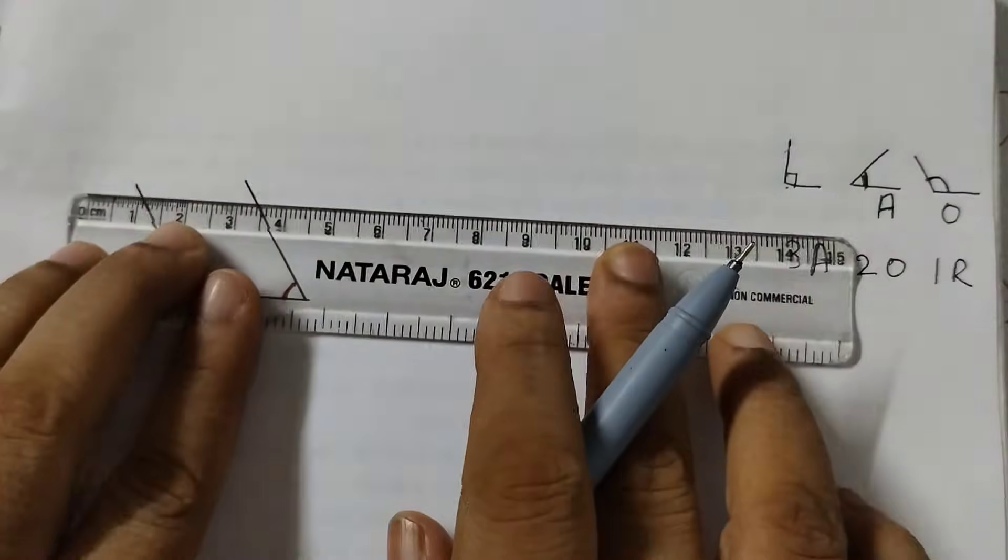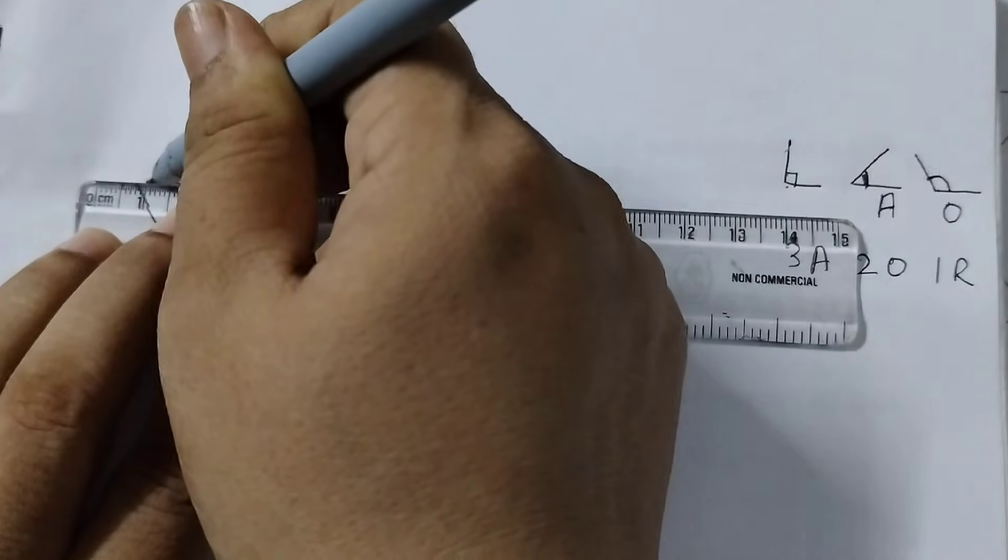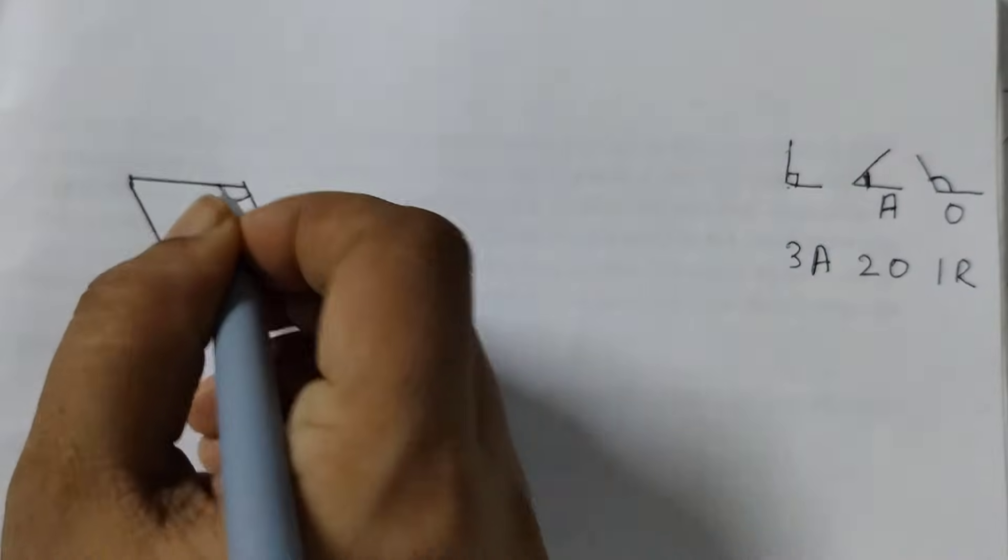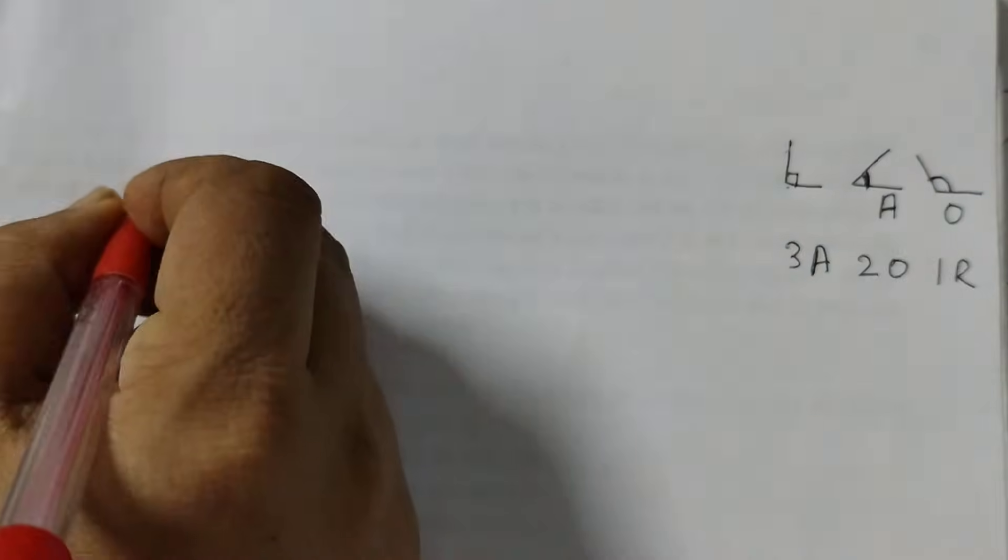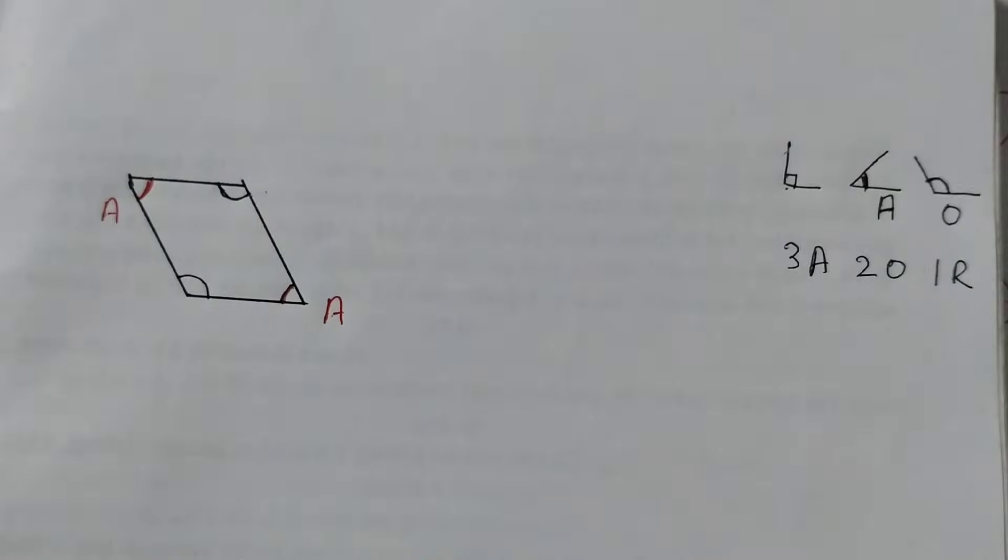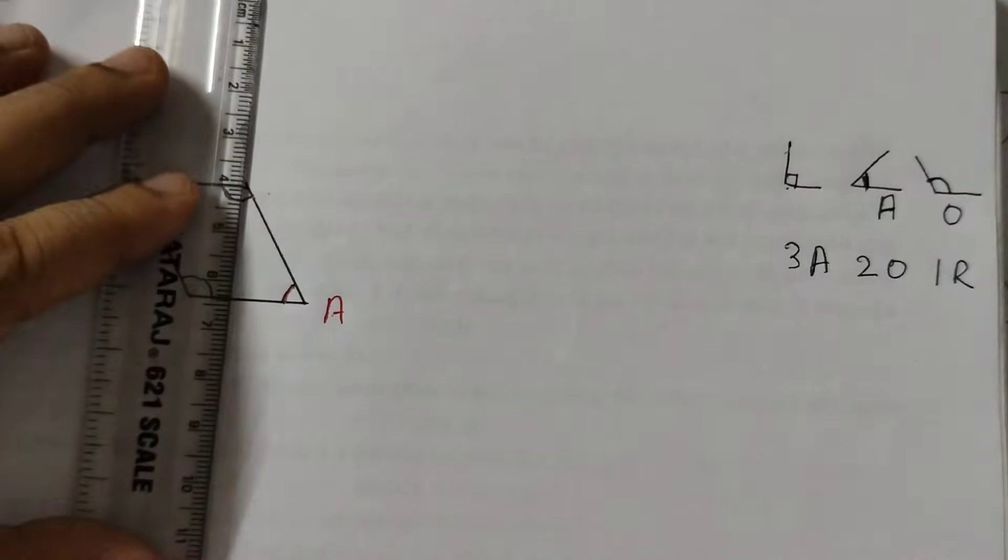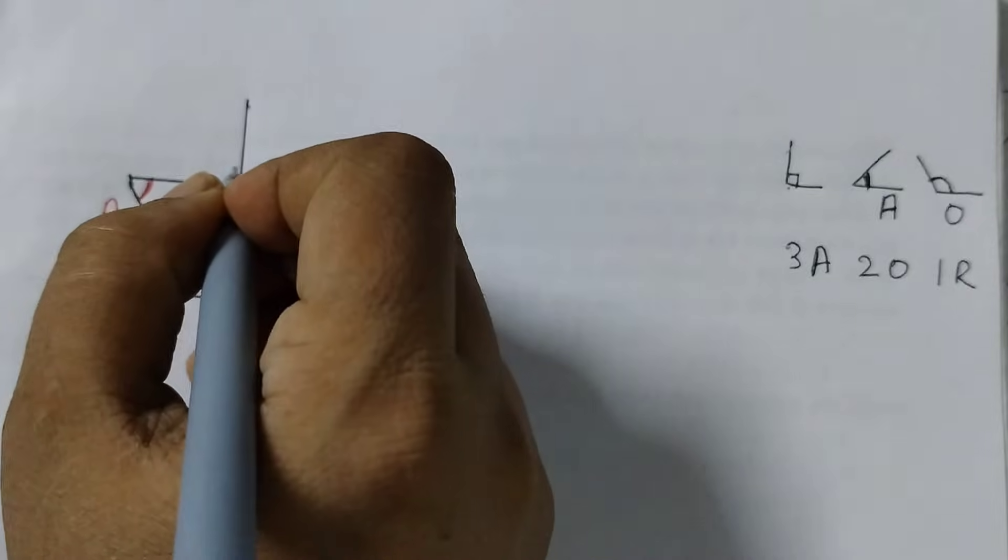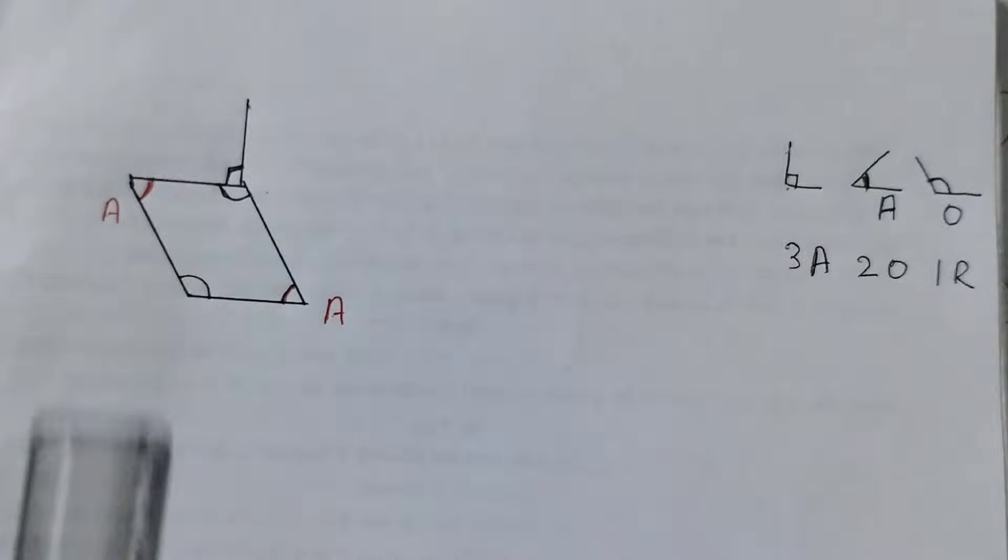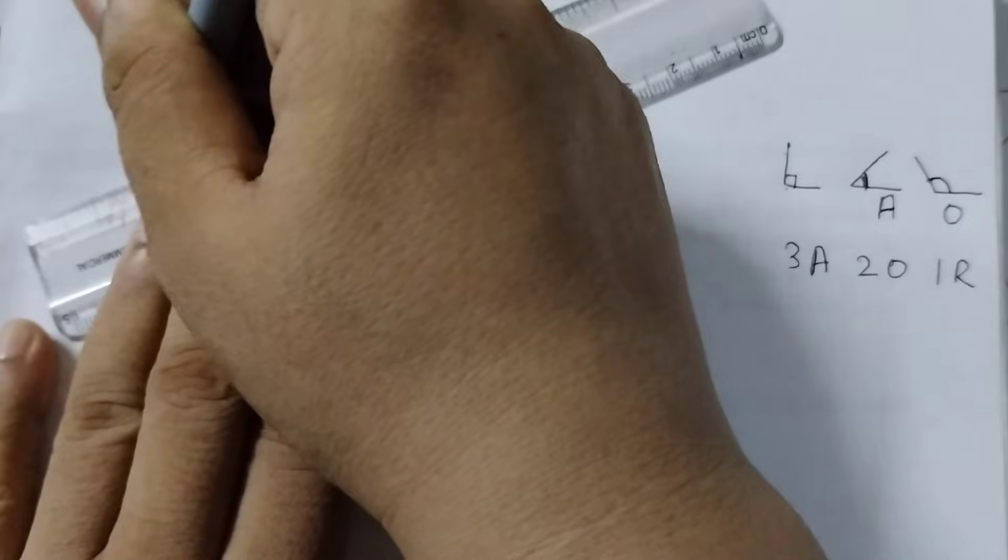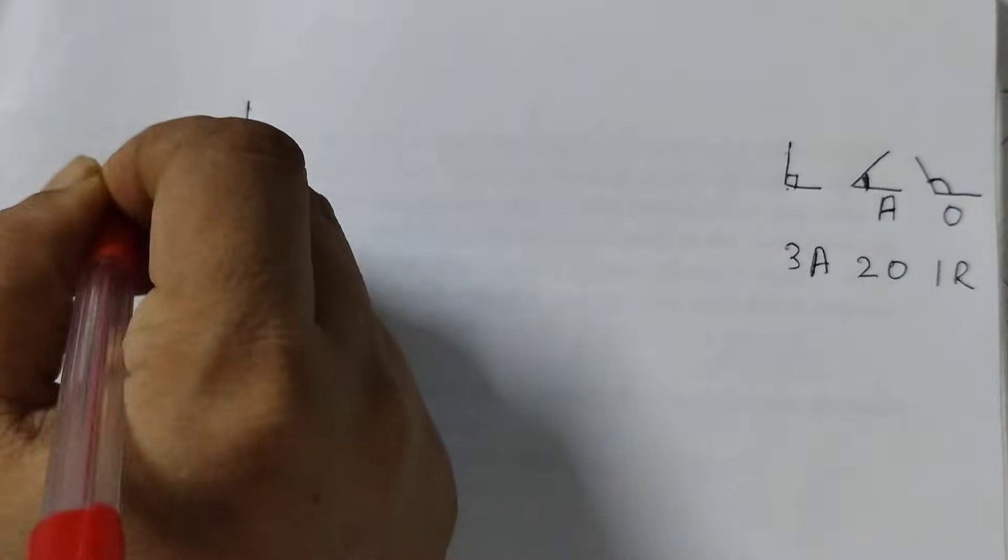And then we will join these 2 points. So this is obtuse angle, this is acute angle. So this is acute angle, acute angle, we got 2 obtuse angles, now we need 1 more acute angle and 1 right angle. So we can draw an L shape like this, this is right angle, this is acute angle.